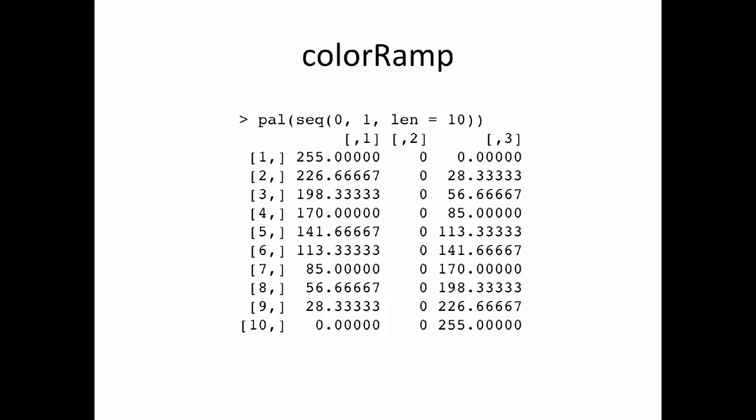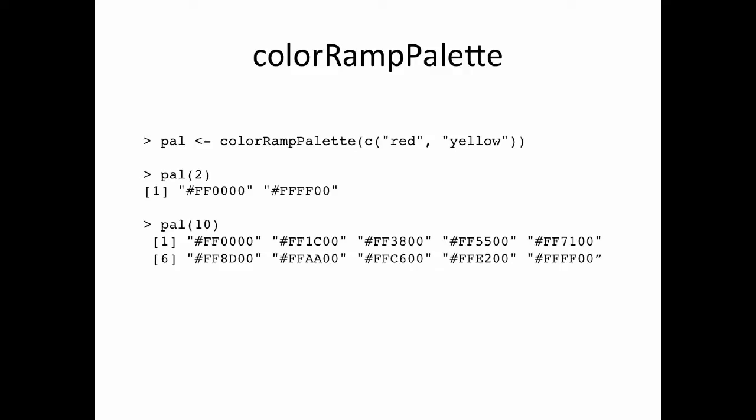If I give a sequence of numbers between 0 and 1, pal gives me a sequence of colors between red and blue. Here I'm passing a sequence of length 10 starting at 0 and ending at 1. At the very top I start with red — maximum red, 0 for green, 0 for blue — and I slowly reduce the red and increase the blue until I reach all blue at the bottom. Those are the various colors you get when you interpolate the palette.